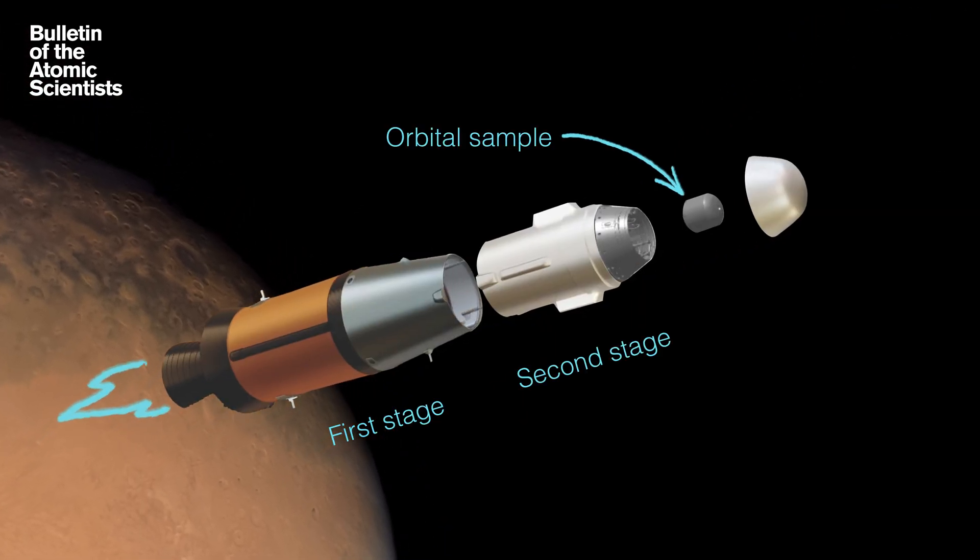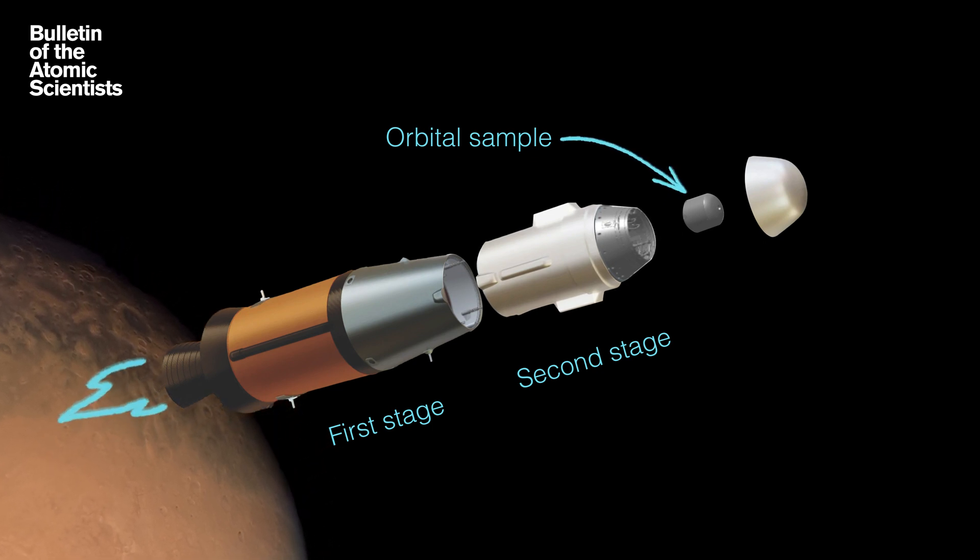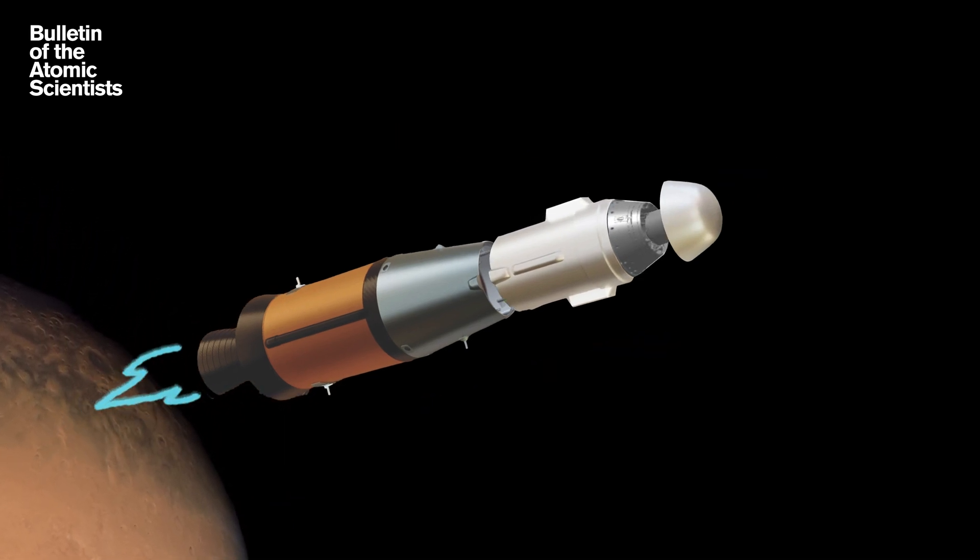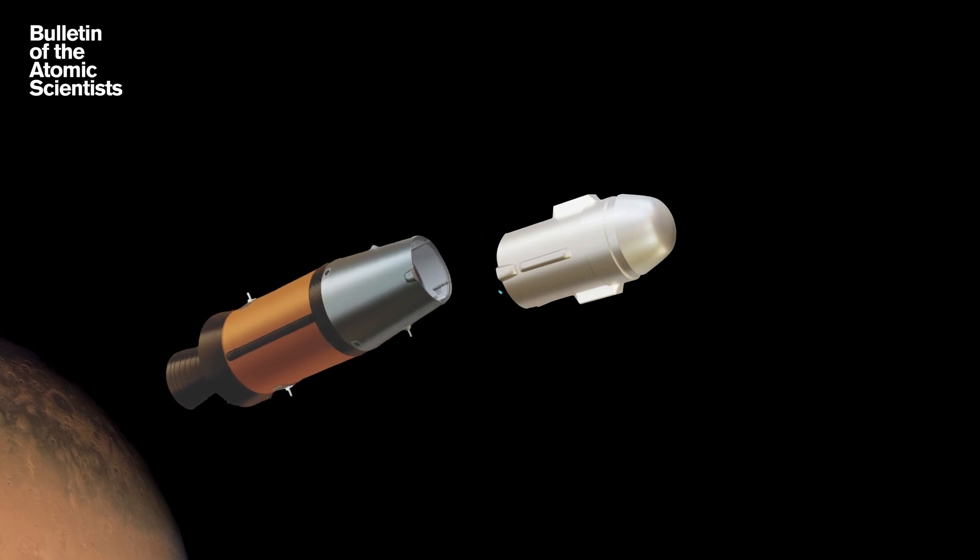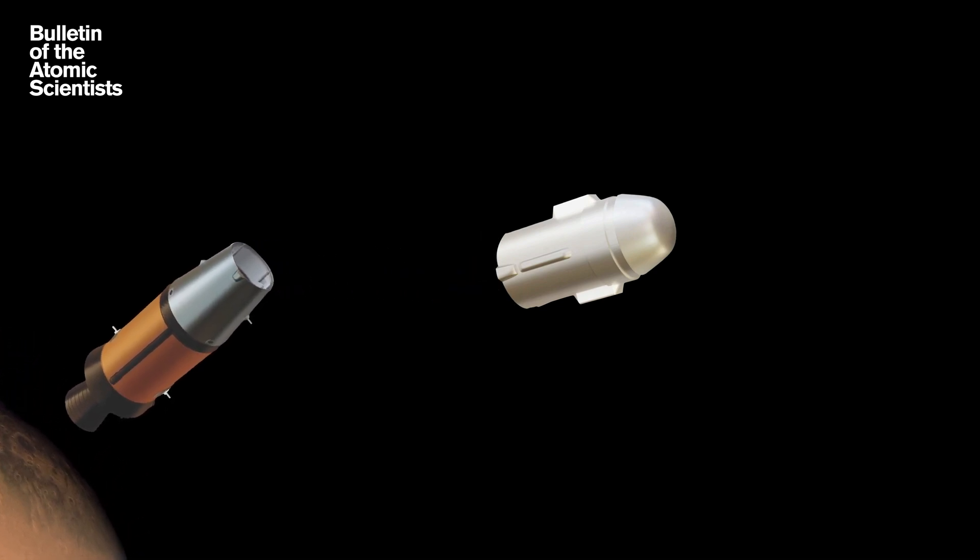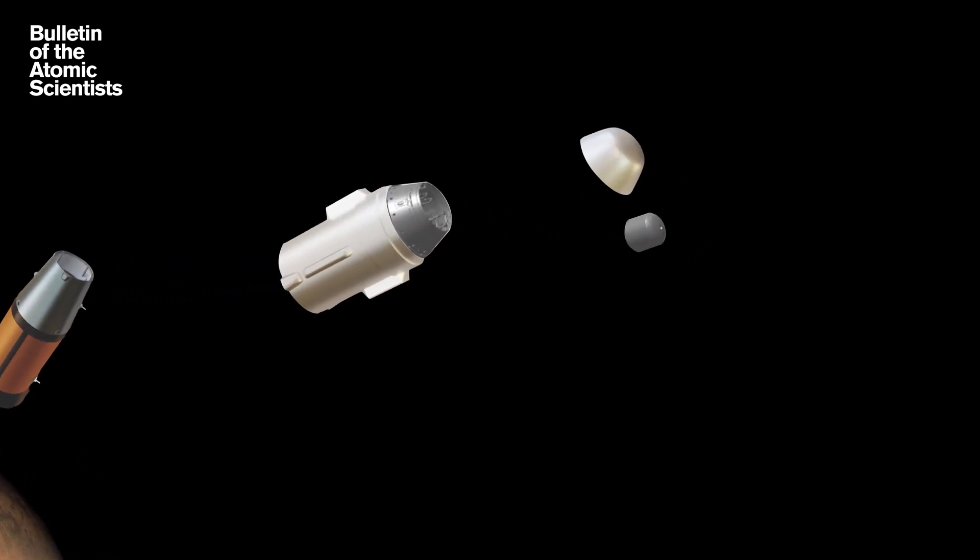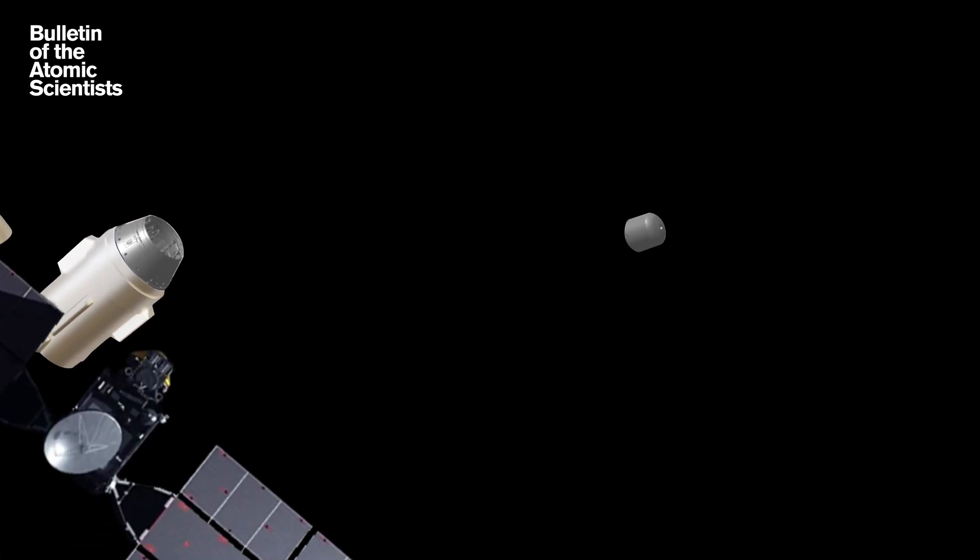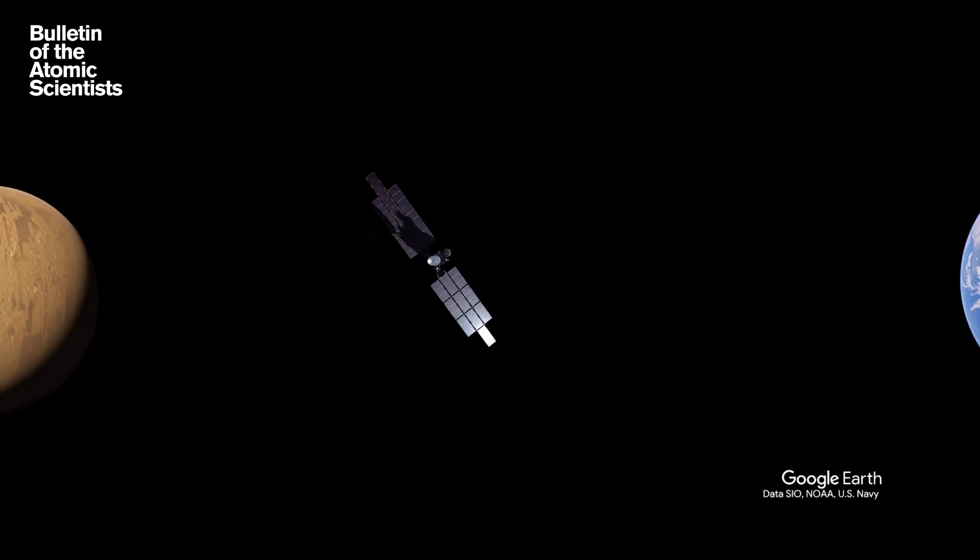The sample container should keep the samples sealed up for their entire journey to Earth. Once in Mars orbit, the sample container is released and captured by the European Space Agency's Earth Return Orbiter. It takes two years to carry the samples to Earth before ejecting them to enter Earth's atmosphere and land.